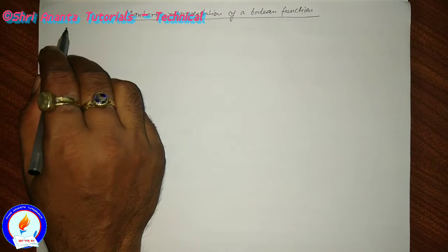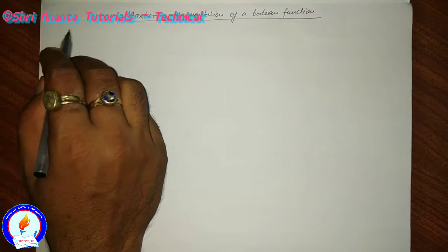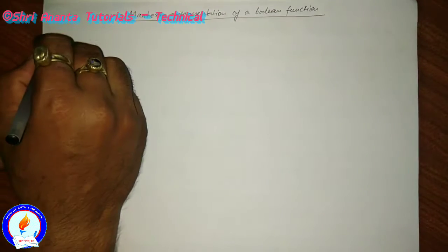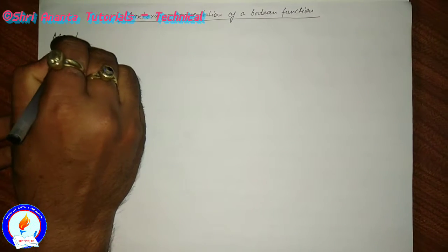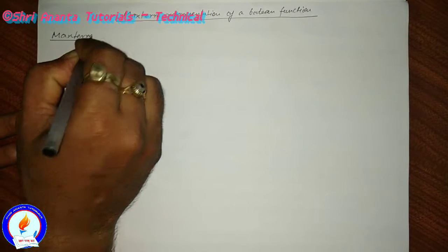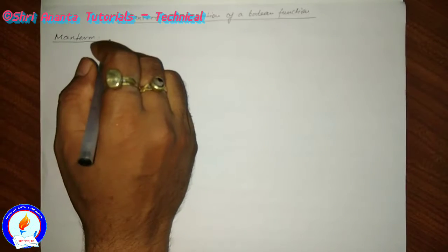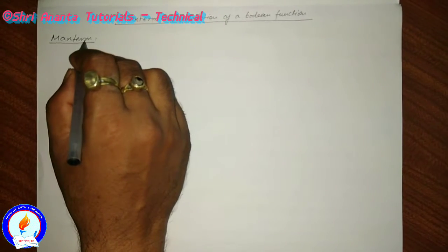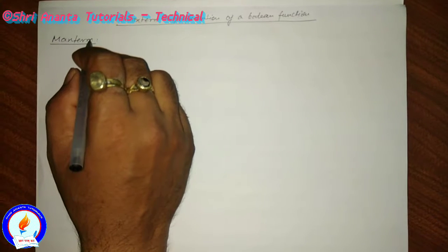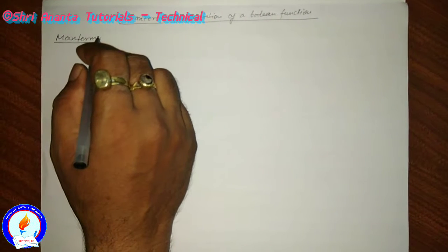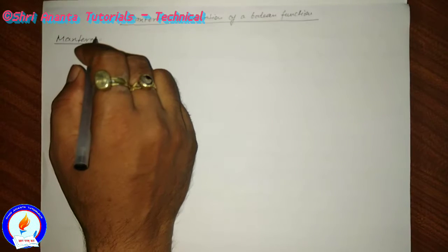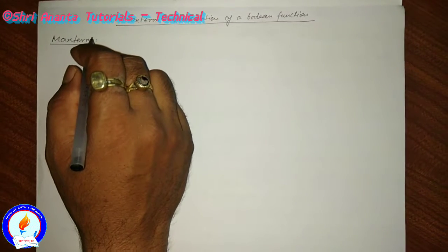In this video, I am going to explain you the max term representation of a boolean function. What is a max term? We can define the max term as a sum term containing all the variables of the function in either complemented or uncomplemented form.